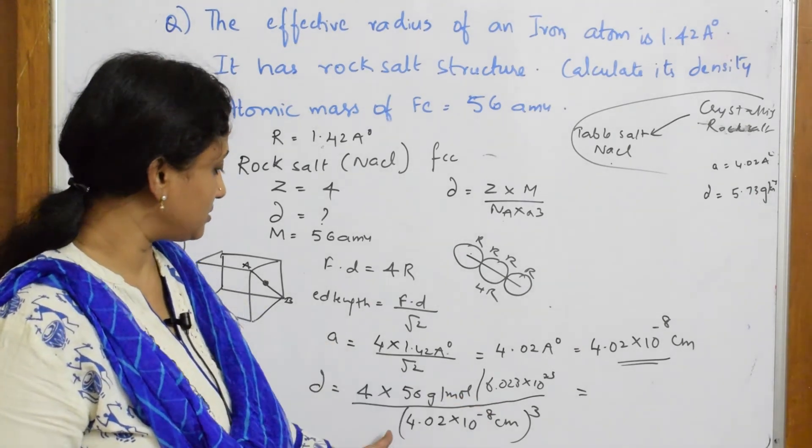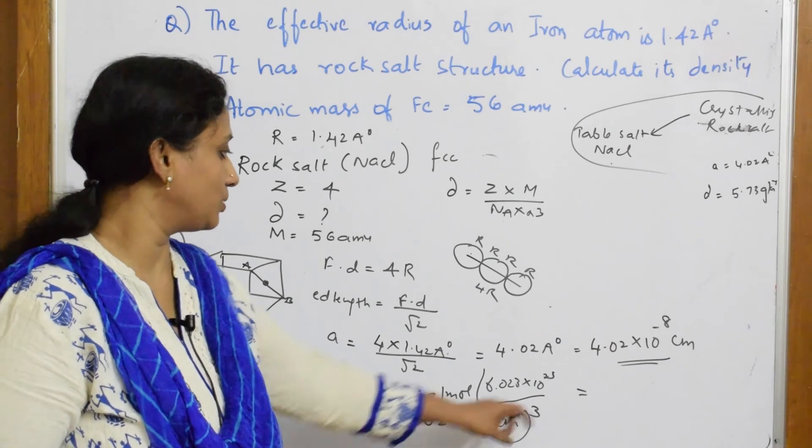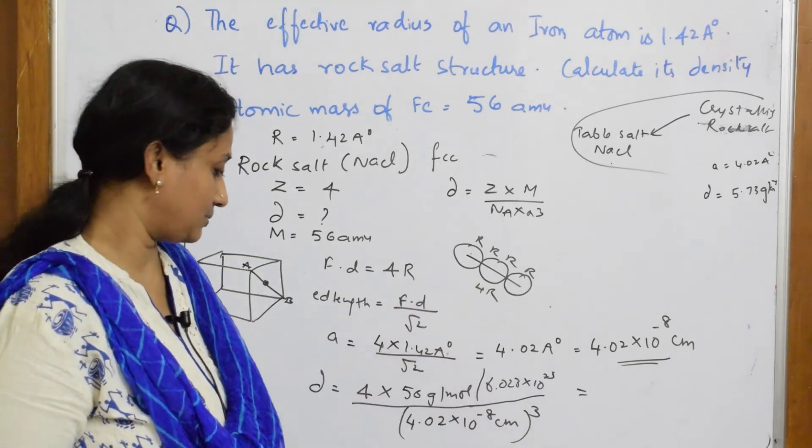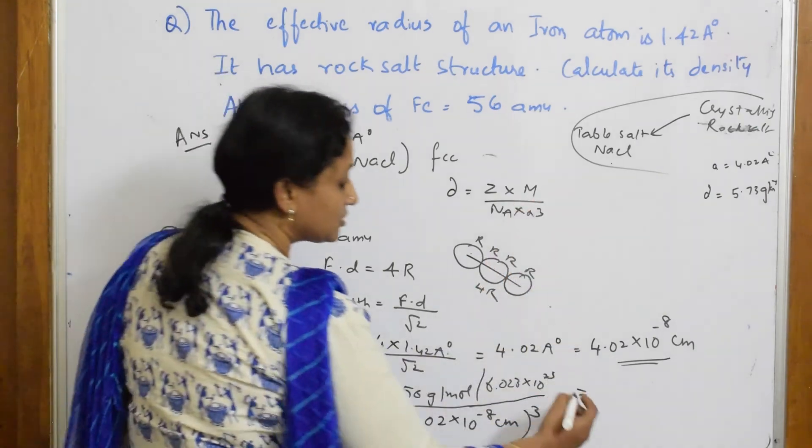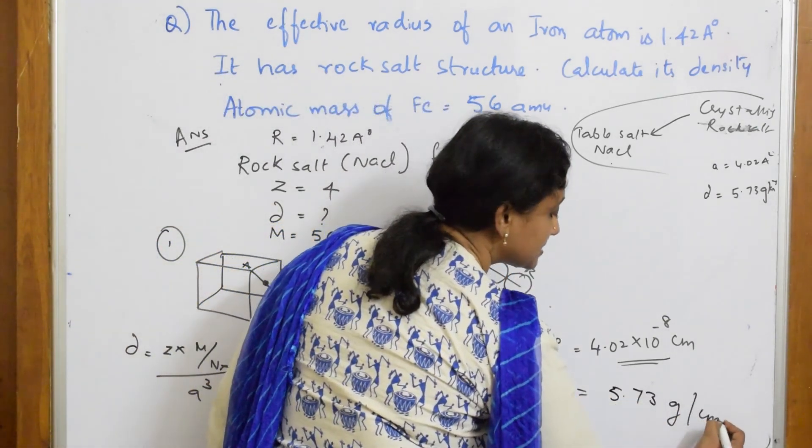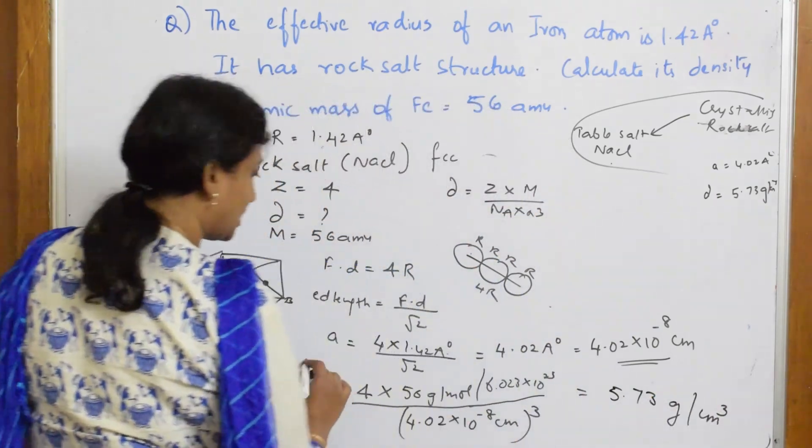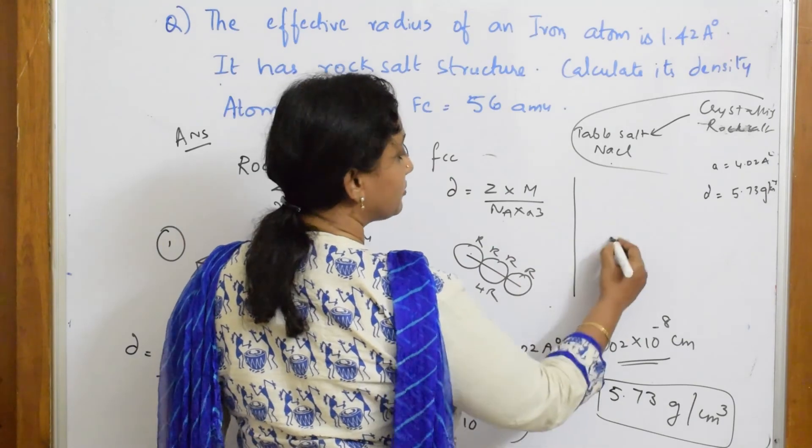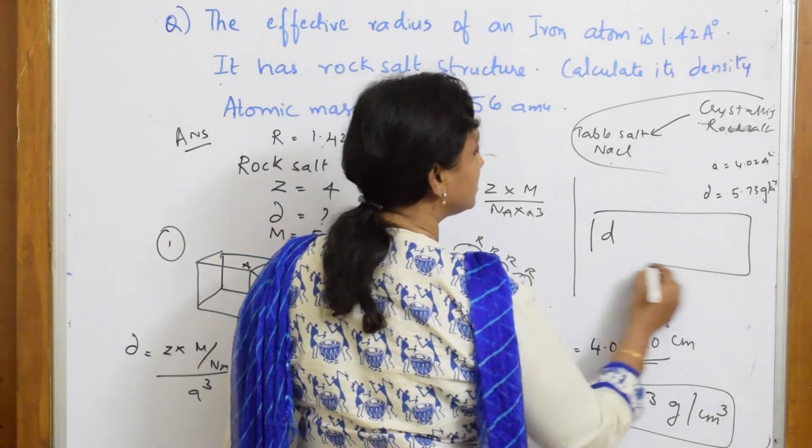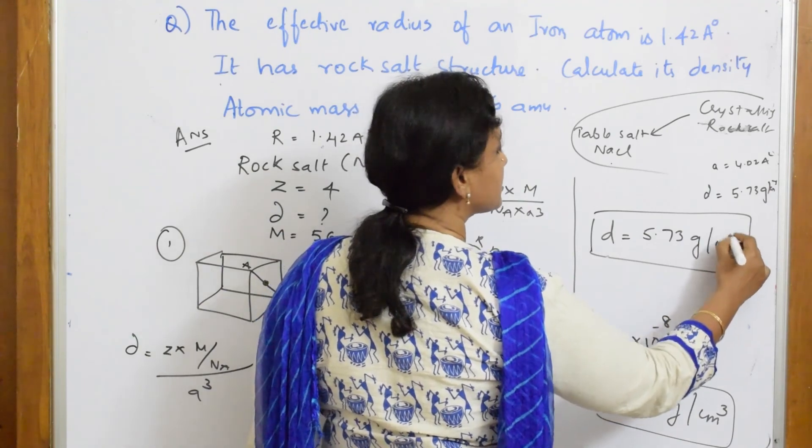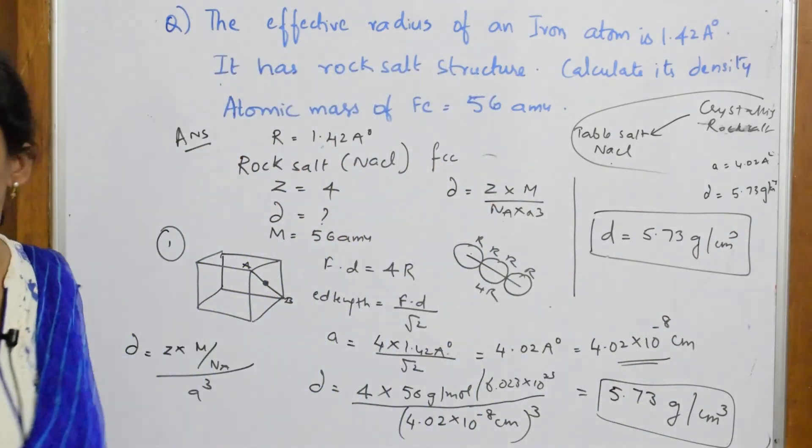So 4 into this. I finally got A cube. How did I get A cube? 4R into the radius given. I get an answer of 5.73 gram per centimeter cube. This is your answer. Final answer. So the density, they have asked me for density. I got 5.73 gram per centimeter cube. This is your answer.